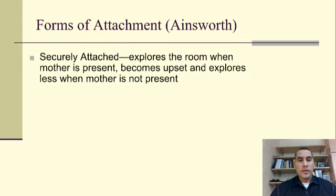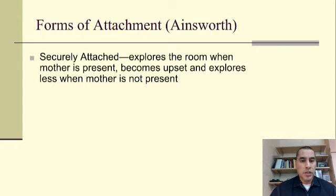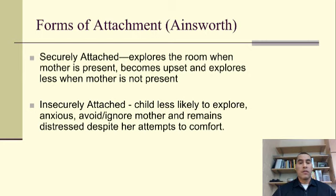Ainsworth noted one of two forms of attachment. First, the securely attached — children who, when the mother was present, felt confident exploring the room and trying new toys. When the mother left, they became upset and more reserved. The presence of the mother created a sense of confidence. She also noticed insecurely attached children who were less likely to explore, more clingy and anxious. Even when the mother attempted to comfort them, they would often avoid her attempts and remained distressed despite her presence.